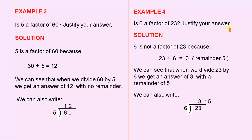Example 4. Is 6 a factor of 23? Justify your answer. 6 is not a factor of 23 because 23 divided by 6 equals 3 with a remainder of 5. We can see that when we divide 23 by 6, we get an answer of 3 with a remainder of 5. We can also write 6 divided into 23 gives you 3 with a remainder of 5.